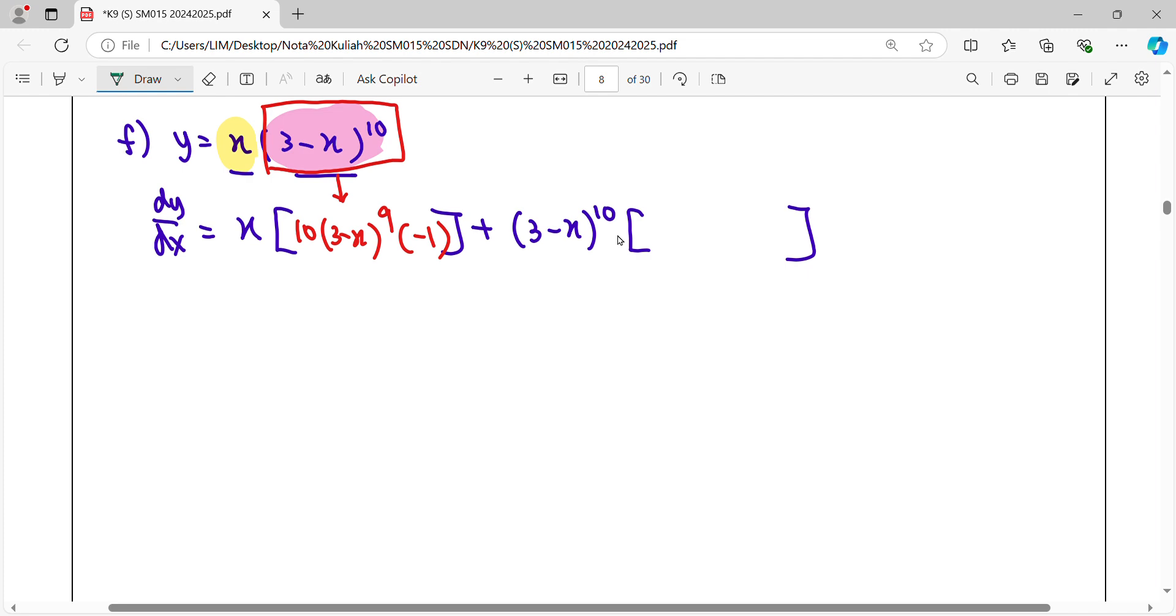Okay, saling depan, different shape belakang. Saling belakang, different shape depan. So for this bracket, we're going to differentiate x here, which is equal to 1.